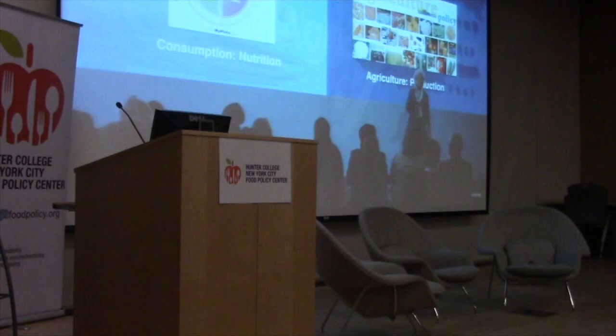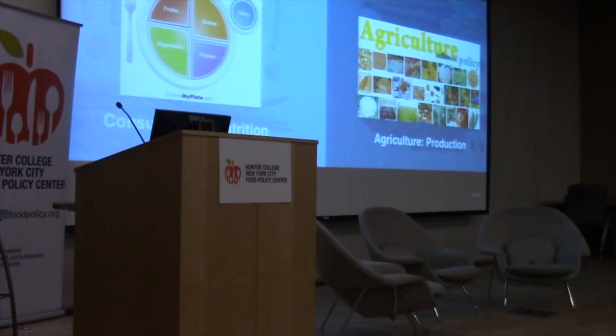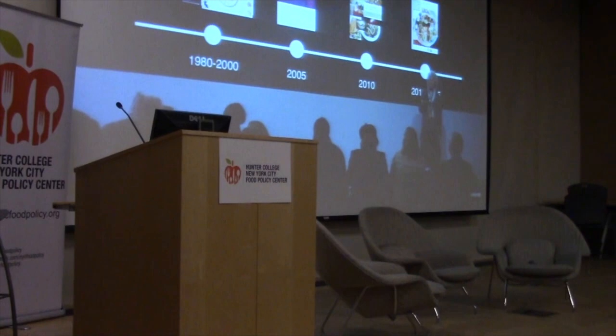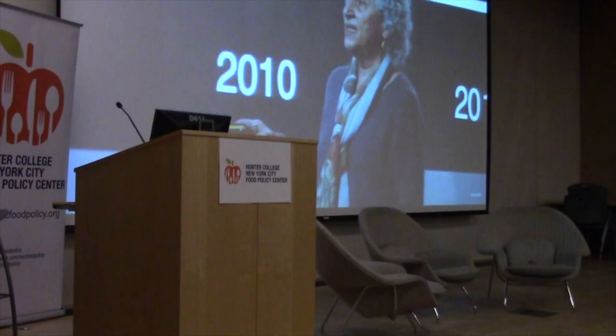In the United States we have two different kinds of policy: a nutrition policy aimed at helping people decide what to eat, and an agricultural policy aimed at food production. These are completely separate policies handled by separate agencies with nothing whatsoever to do with each other — they need to be brought together. Nutrition policy is expressed in the Dietary Guidelines for Americans, which started in 1980 and come out every five years.